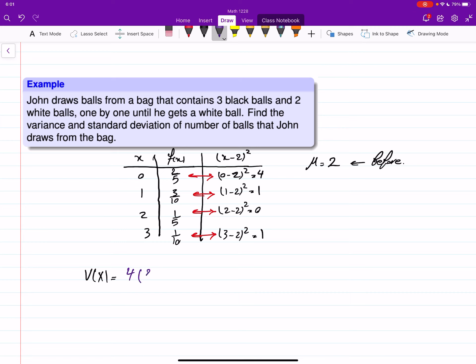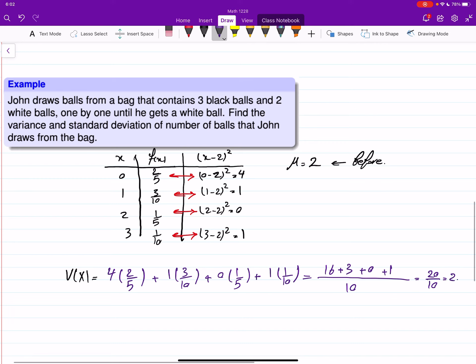What we do here is 4 times 2 over 5, plus 1 times 3 over 10, plus 0 times 1 over 5, and 1 times 1 over 10. If I put all the denominators as 10, this will be 16 plus 3 plus 0 plus 1, and that will give me 20 over 10. Accidentally we got V(X) also as 2.